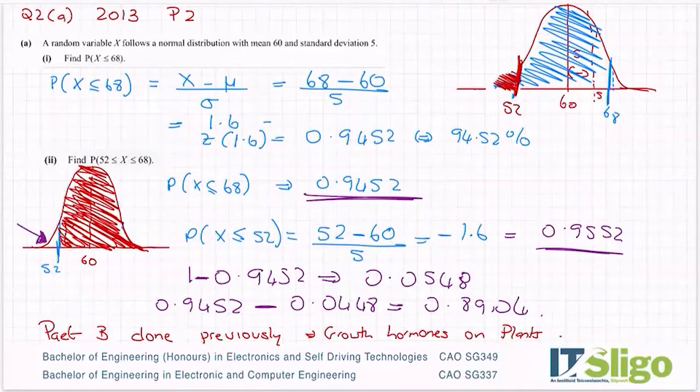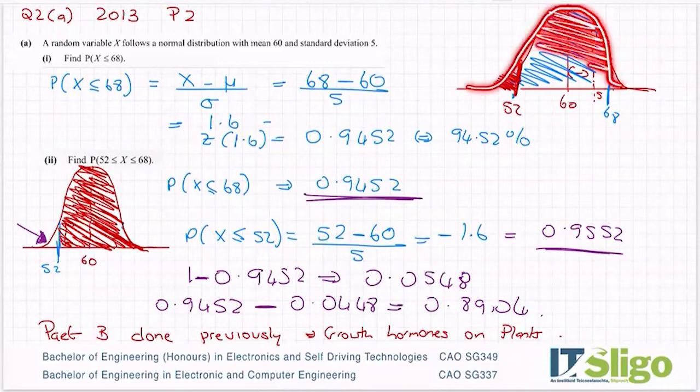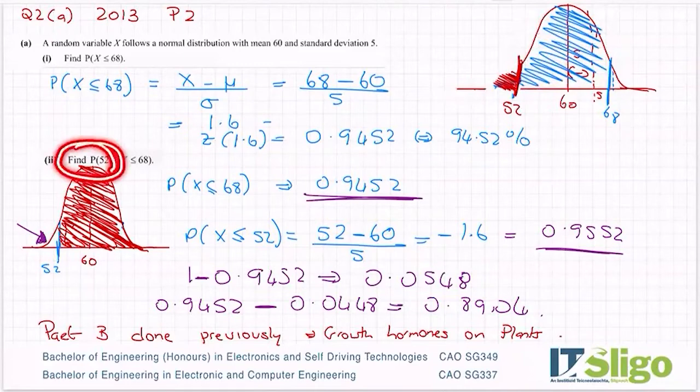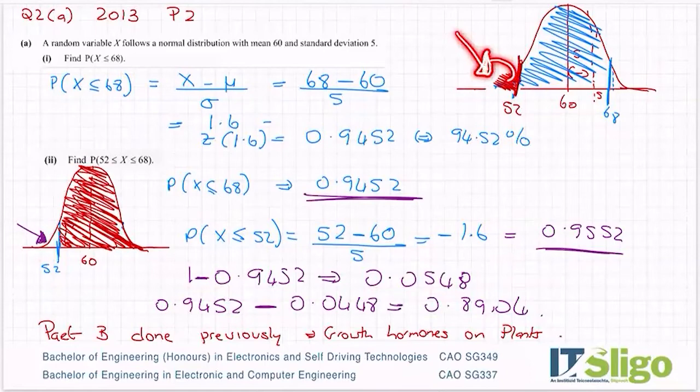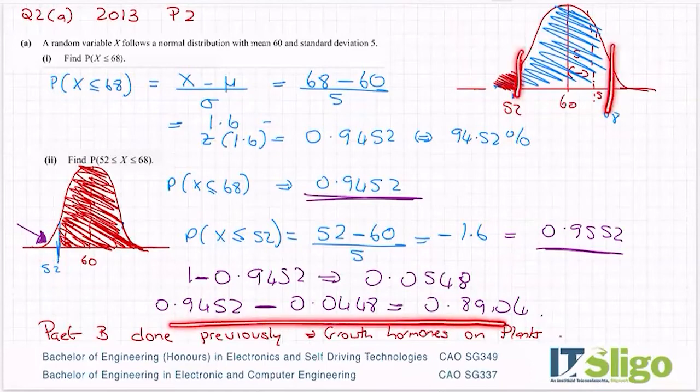So to summarize, when it's a two-tailed test, do the big one first and work out the area or the probability of you being less than that number, and it's all the way down to the negative. Then do the lower one separately. In many cases, it'll be a minus number. There are no minus standard deviations in the log table. So you have no option but to look up the positive, subtract it from one to get the probability of being in this region here. And then subtract one from the other to get the probability or the proportion that's between the two numbers.